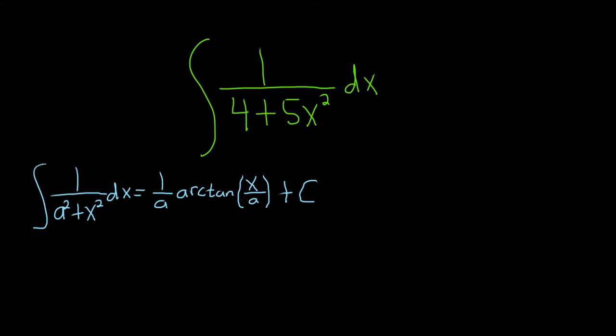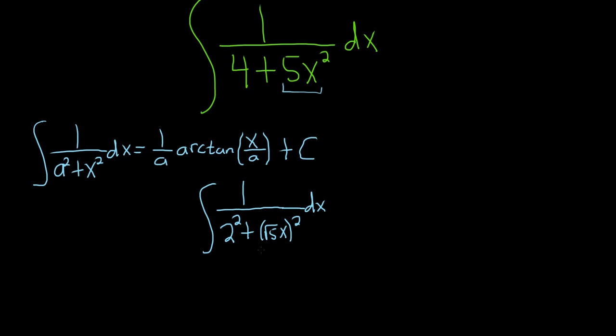So you see it almost fits the form in this problem here. The trick is to rewrite this as follows. So we have the integral of 1 over, we can write the 4 as 2 squared. And then this 5x squared here, we can write it like this. This is really cool. Watch this, square root of 5 times x, quantity squared. You see, because if you square the square root of 5, you get 5. If you square the x, you get x squared.